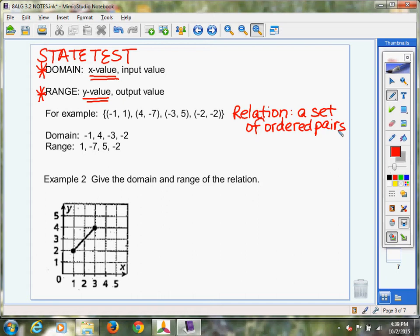So a relation is just a set of ordered pairs. Remember what I emphasized in the last example. The first number of an ordered pair is your x. The second one is your y. So when you're writing out your domain, you're listing them. That's your domain: negative 1, 4, negative 3, and negative 2.